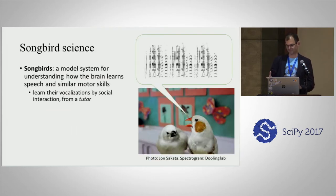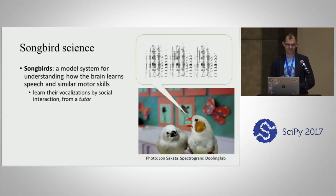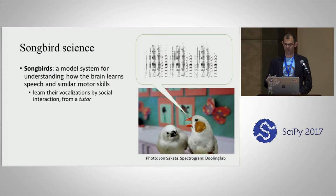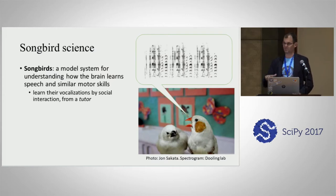To explain why we would do that, I have to explain our work. We're a neuroscience lab, and we study how the brain learns speech and similar motor skills — think playing the piano or shooting basketball hoops. Anything that you learn by imitation and then perfect by practicing it thousands of times.